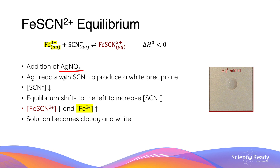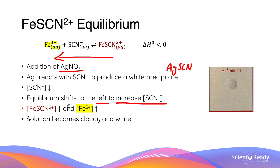Silver ions will react with thiocyanate ions to produce a white precipitate — silver thiocyanate. This causes the concentration of thiocyanate to decrease, which moves the equilibrium to the left in order to increase the concentration of thiocyanate ions. This decreases the concentration of iron thiocyanate but increases the concentration of iron 3+ ions. You might expect the solution to appear less blood red and more pale yellow, but the formation of the white precipitate actually makes the solution look cloudy and white, as shown in the diagram.